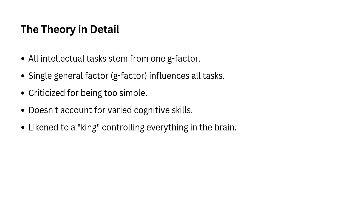One of the major limitations of this theory is its simplicity. It doesn't account for the wide variety of cognitive skills we now understand people have. Think about how different tasks like playing chess, learning a language, or performing in sports are — how can one kind of intelligence explain success in all these areas? This theory faced criticism as more nuanced understandings of intelligence emerged. It is like saying there's just one king in the brain that controls everything, which doesn't account for the fact that different parts of the brain specialize in different tasks, as we now know through modern research.